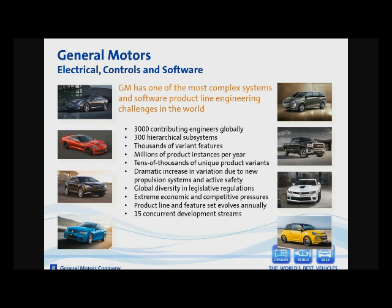When it comes to doing controls and software, GM has about 3,000 engineers in the world who work on that. We have around 300 different subsystems — a subsystem would be, for example, determining the gear you're in, processing voice prompts, or managing the windows in the vehicle. So we have thousands of feature variants, millions of products each year being built, and a lot of unique variants.